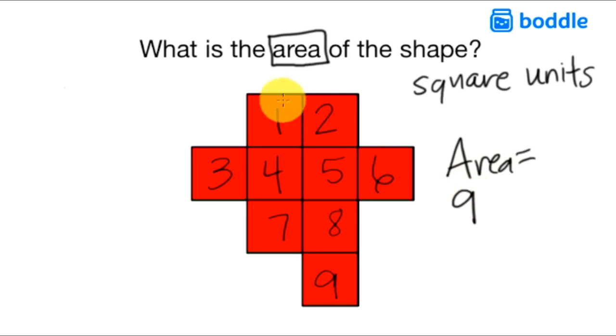The area is nine, but we need to make sure we label it because we're looking at the square units. So the area is nine square units. I could also label it as units squared.